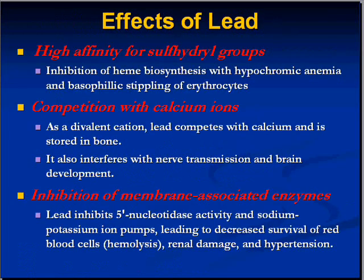Biochemically, lead has a high affinity for sulfhydryl groups, which results in toxic effects on red blood cells — we see basophilic stippling of erythrocytes and a hypochromic type of anemia. Lead chemically competes with calcium as a divalent cation and therefore accumulates in bone. It causes neurotoxicity because of calcium's importance in nerve transmission. Lead also inhibits membrane-associated enzymes like 5'-nucleotidase, resulting in decreased red cell survival, hemolytic anemia, renal damage, and even hypertension.